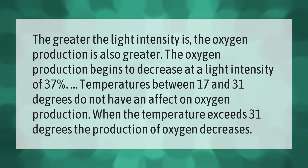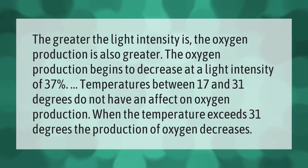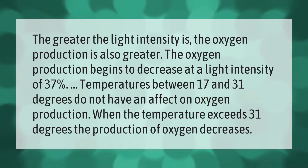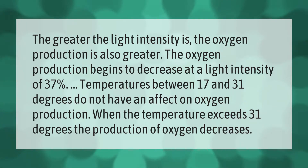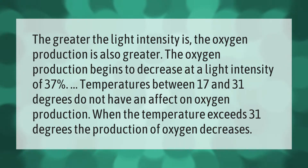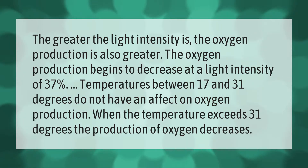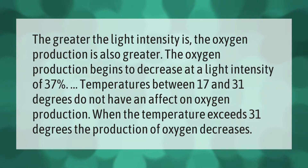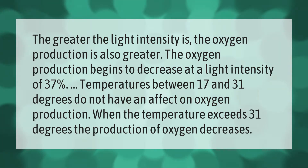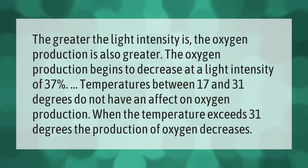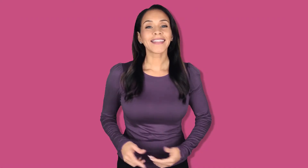The greater the light intensity, the greater the oxygen production. Oxygen production begins to decrease at a light intensity of 37 percent. Temperatures between 17 and 31 degrees do not have an effect on oxygen production. When the temperature exceeds 31 degrees, the production of oxygen decreases.